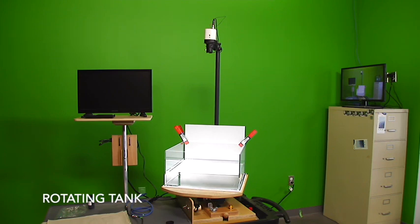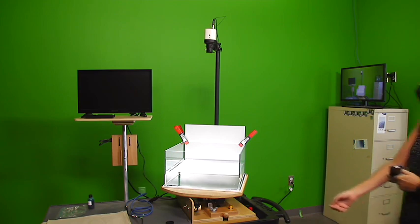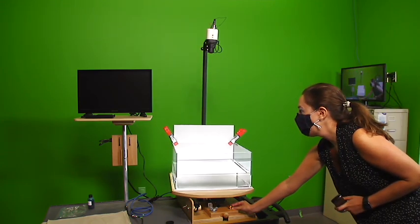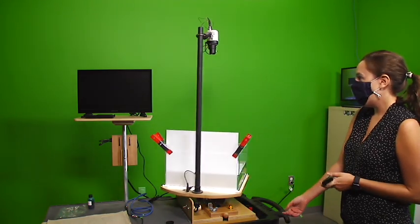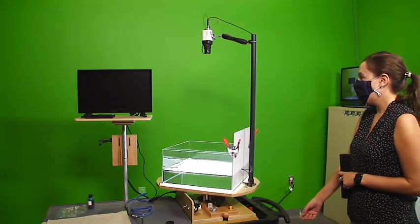This is our rotating tank, consisting of a clear acrylic tank that can be filled with water and placed on a turntable that can rotate. There's a camera mounted on the turntable that rotates with it. The turntable spins counterclockwise with an adjustable rate of rotation between 1 and 30 rotations per minute.